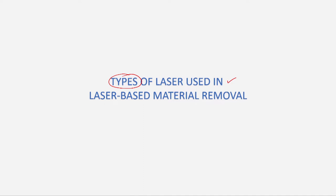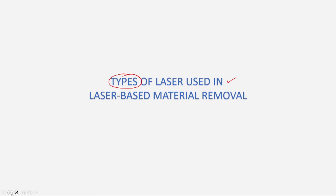For all these processes, three types of lasers in terms of lasing medium are used: solid-state laser, liquid-state laser, and gaseous lasers. The first laser commonly used in industry is the Nd:YAG solid-state laser, meaning the lasing medium is in solid form. This laser falls in the near-infrared region and provides a wavelength of about 1064 nanometers. It is used in both pulse mode and continuous mode.